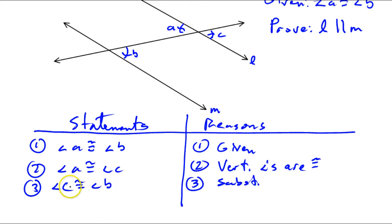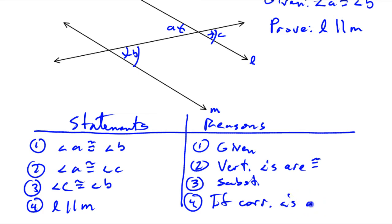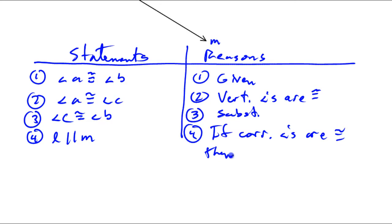Now, we can say that line L is parallel to line M, because C and B are corresponding angles. And that means if corresponding angles are congruent, then lines are parallel.